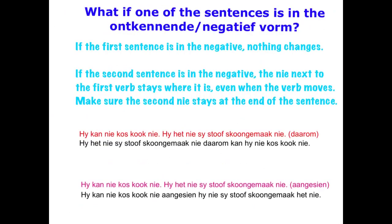What about things that apply to more than one group? Let's look at if one of the sentences is in the ontkennende or negatief form — in other words, one or both sentences is negative. Where the first sentence is negative, nothing changes. If the second sentence is in the negative, that creates a little bit of a different story. What we want to do is leave the first nie exactly where it is — even though the first verb is going to move, that nie needs to stay in that place, so it will normally end up next to the subject. And then the second nie you're going to want to keep at the very end of the sentence.